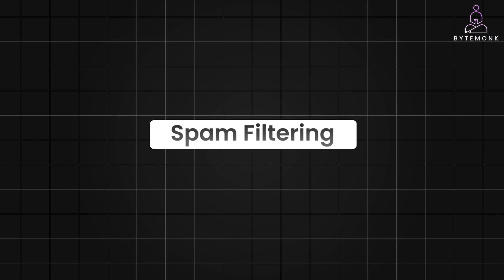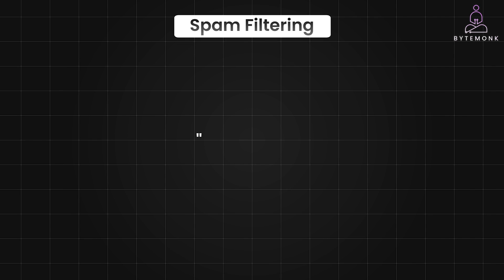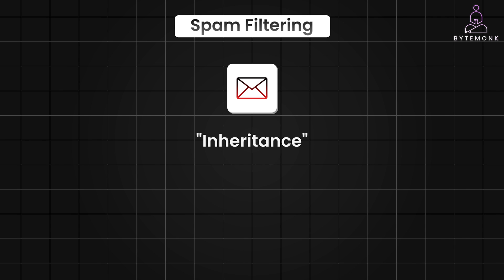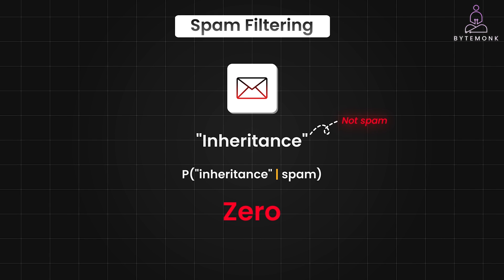Imagine you are building a spam filter using Naive Bayes. Your vocabulary includes the word 'inheritance.' If you haven't seen any spam emails containing the word 'inheritance' in your training data, the probability of the word 'inheritance' given an email is spam would be zero. This is problematic, because if a new email contains the word 'inheritance,' the filter might automatically assume that it's not spam, even if other words suggest otherwise.